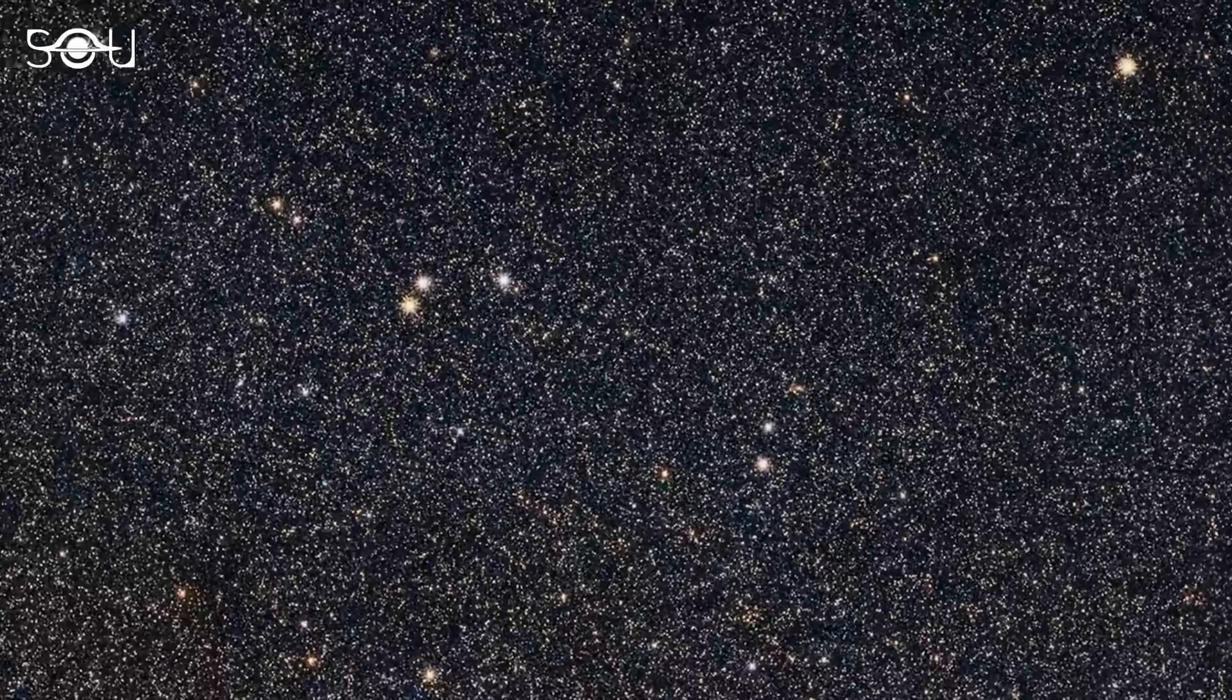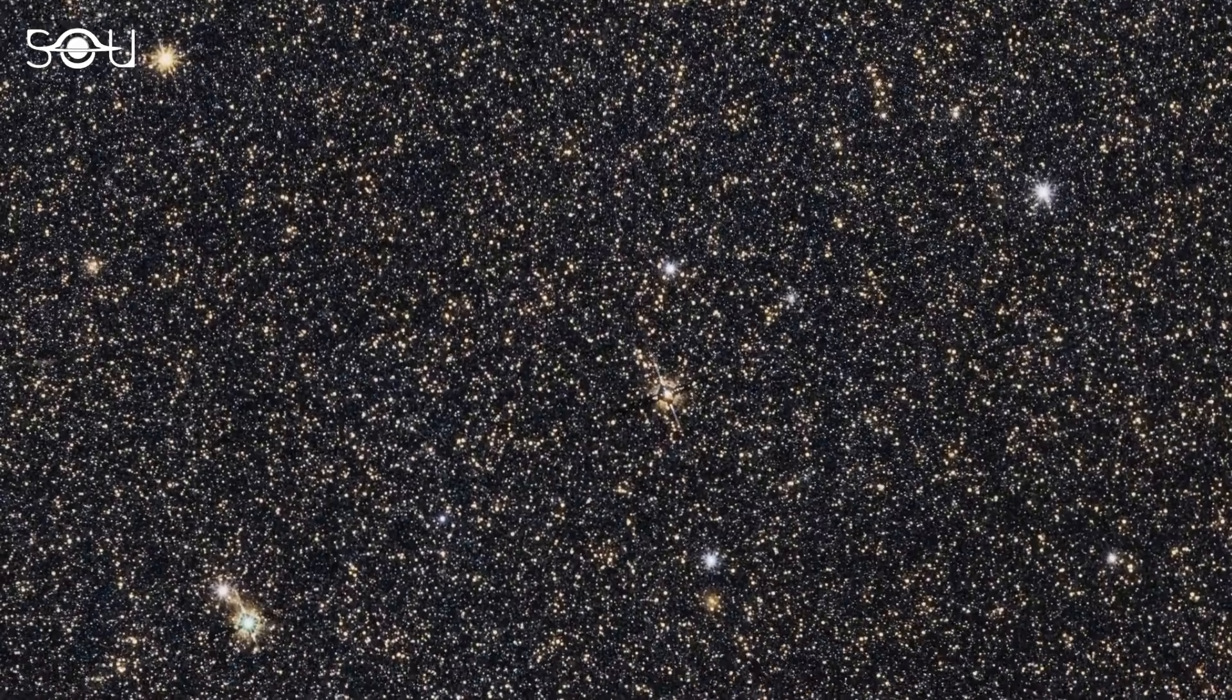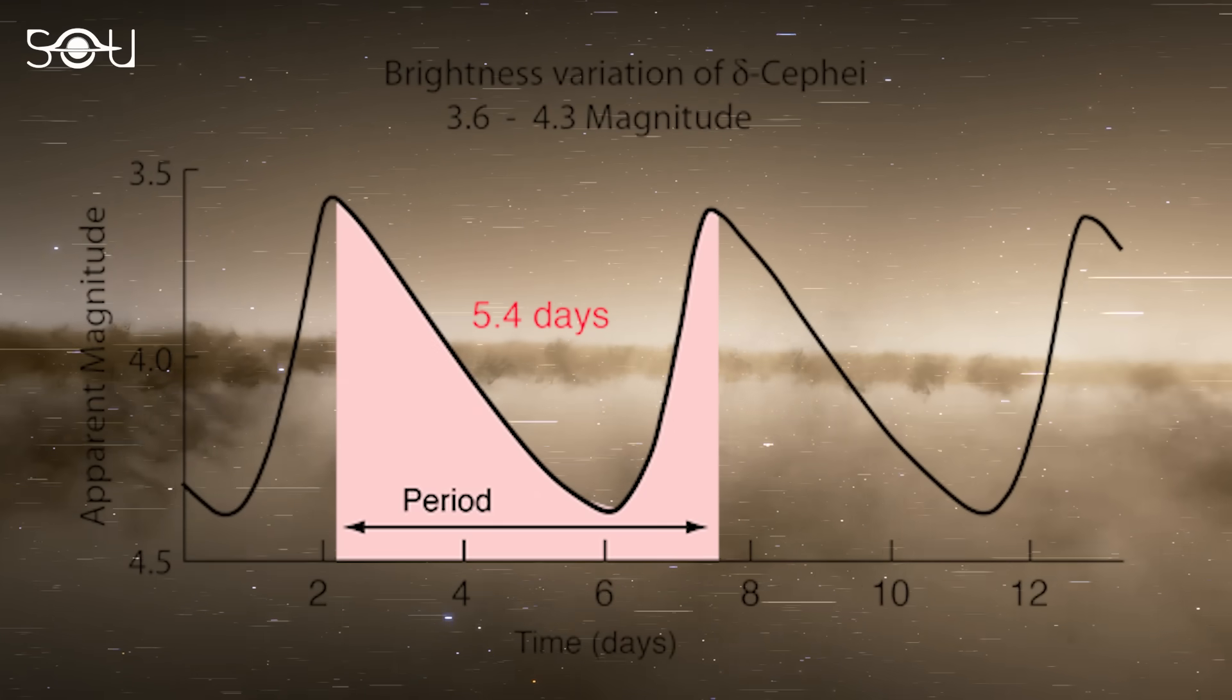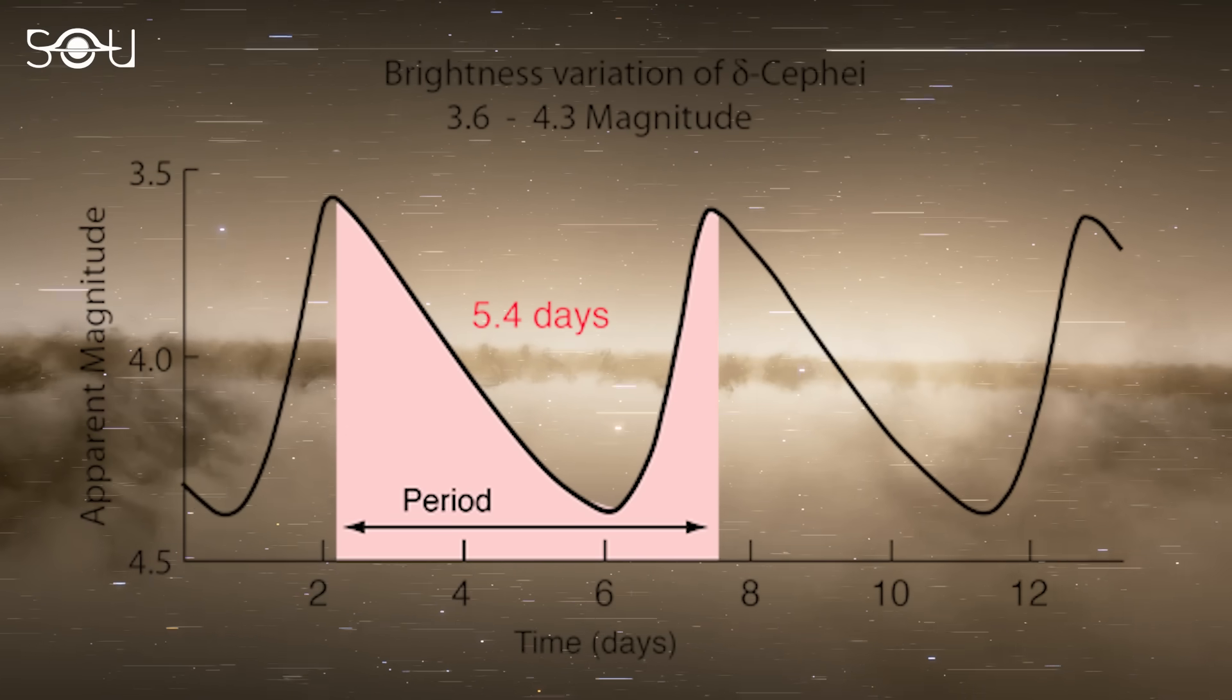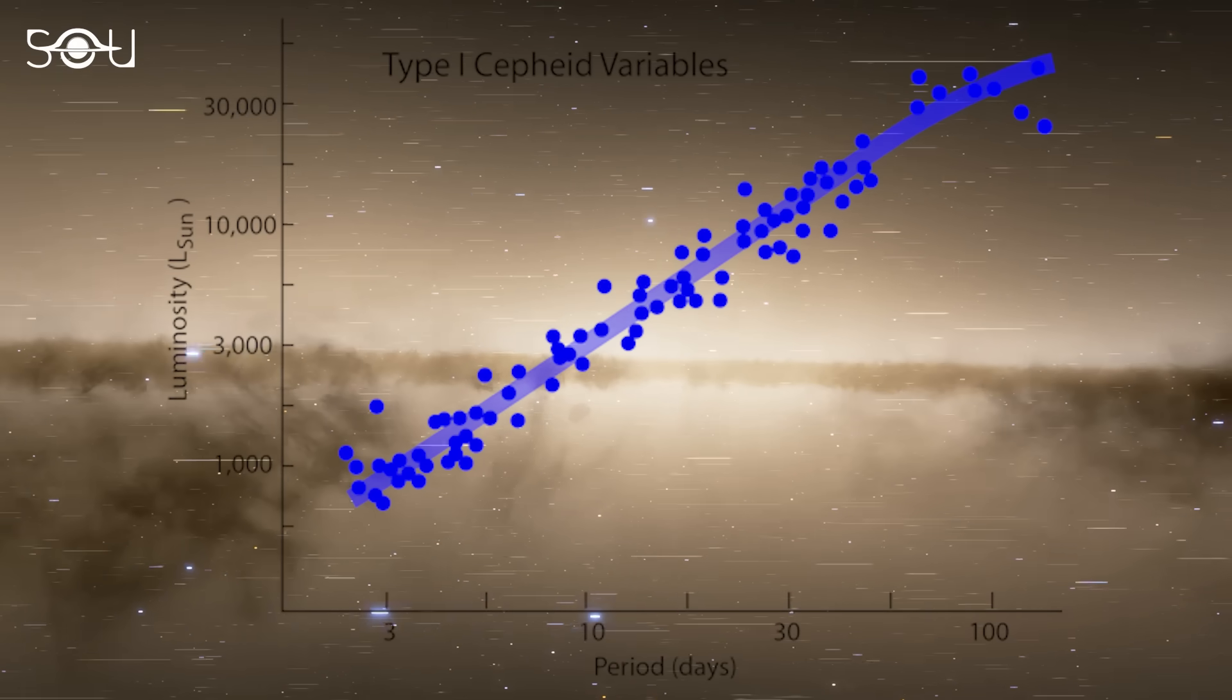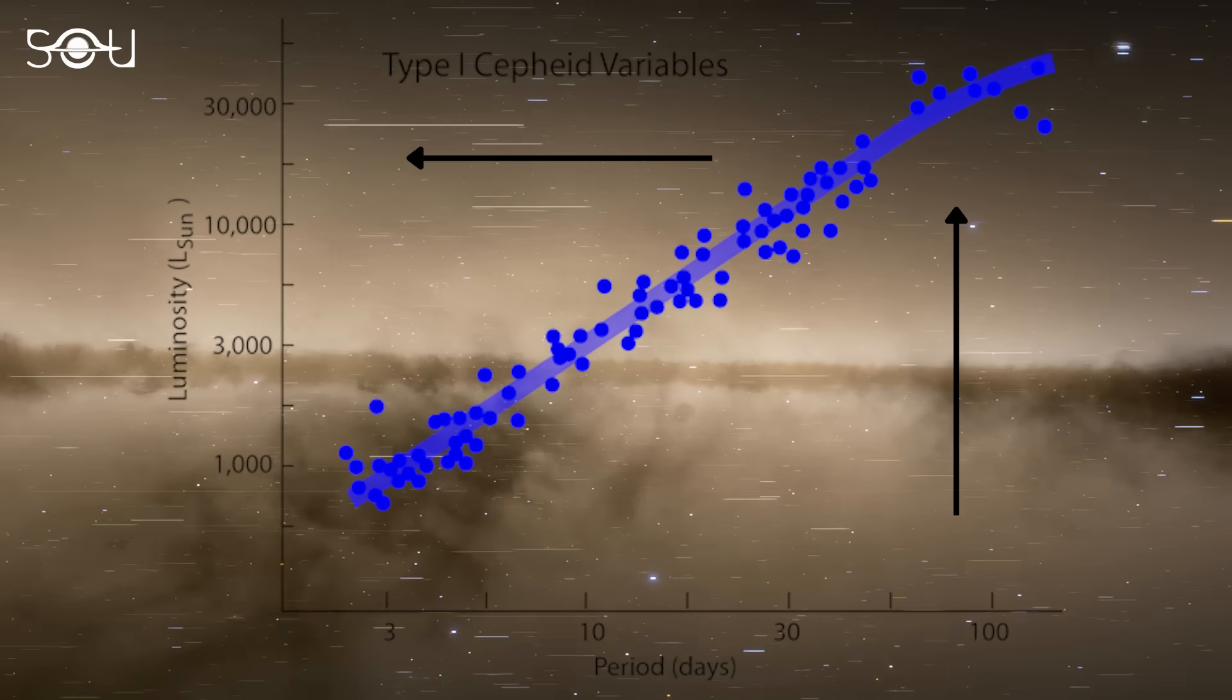One of the standard ways to measure the distance to a galaxy is via observing the Cepheid variables residing in it. Like all other variable stars, Cepheids progress through a complete cycle from maximum brightness to a minimum and then back to maximum again. A Cepheid's variability period is directly related to its luminosity. The longer the variability period, the more luminous the Cepheid is.